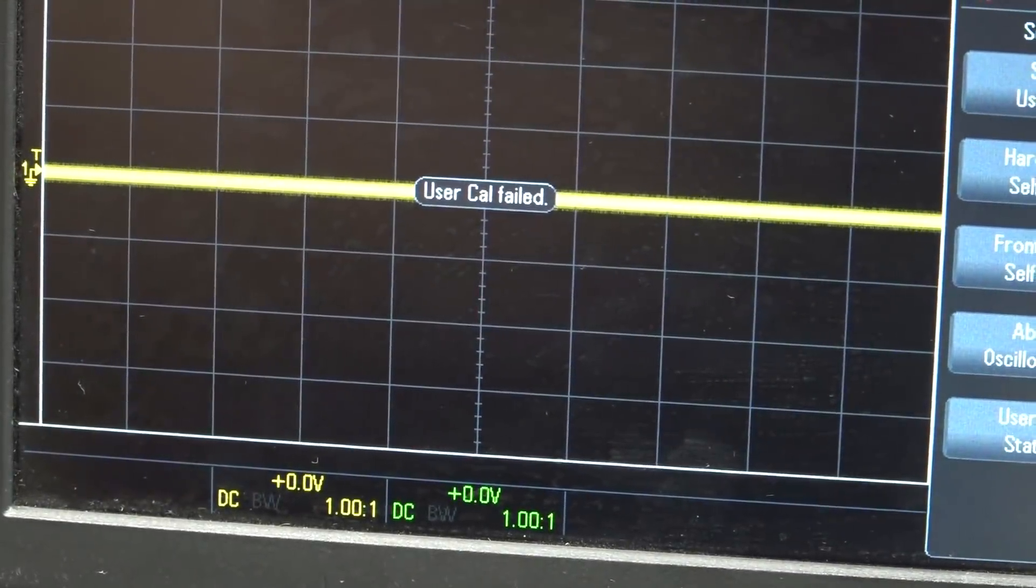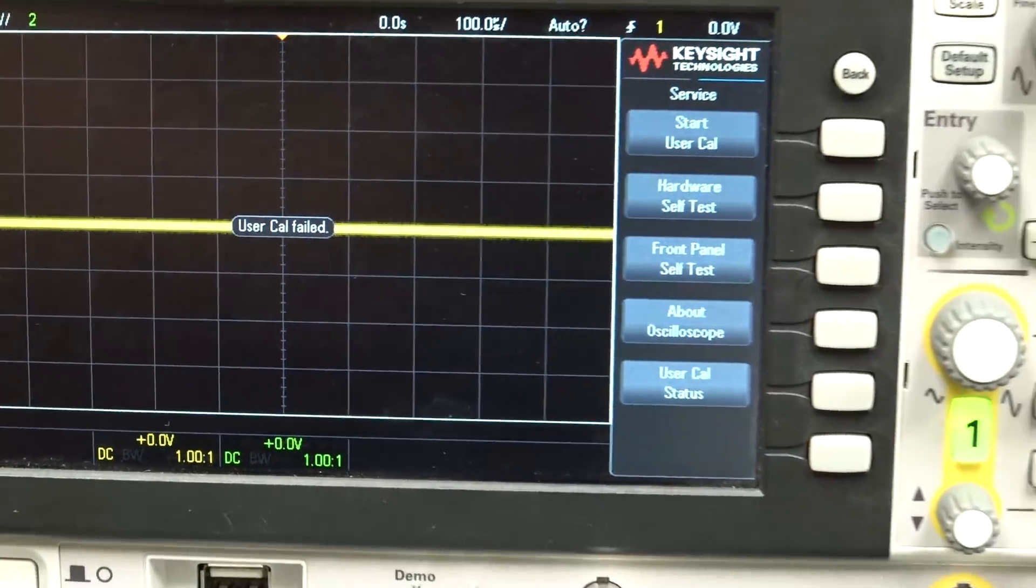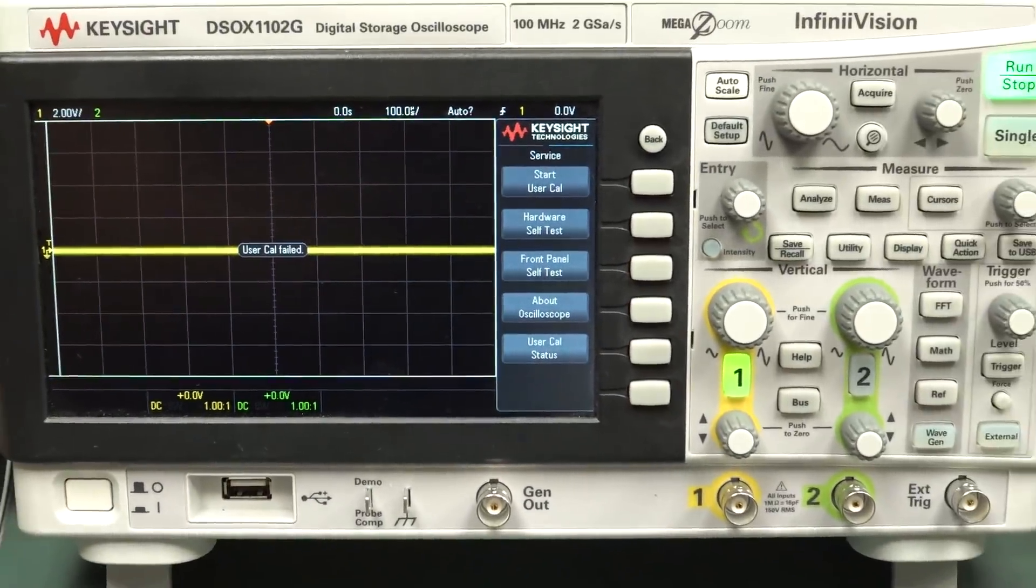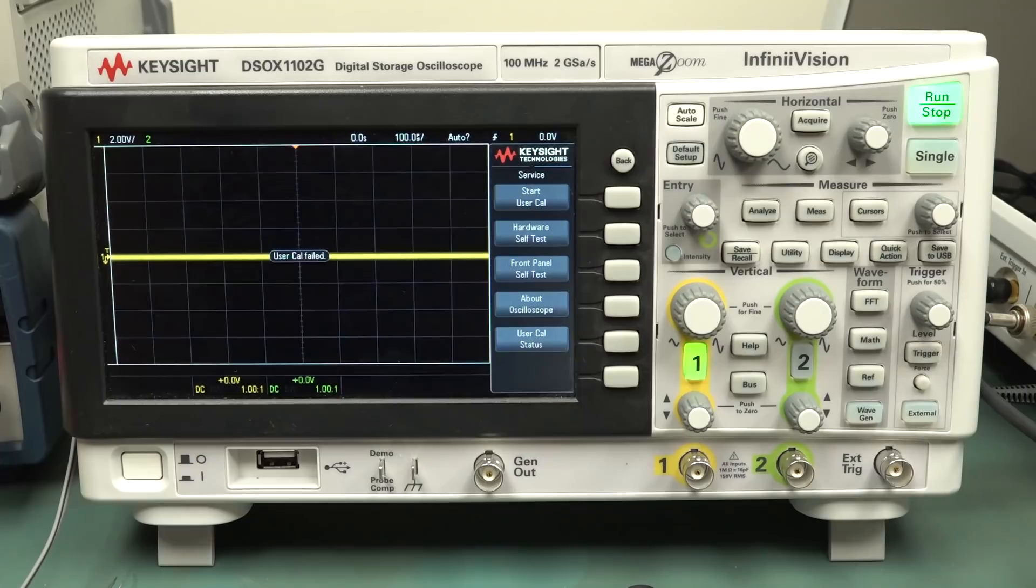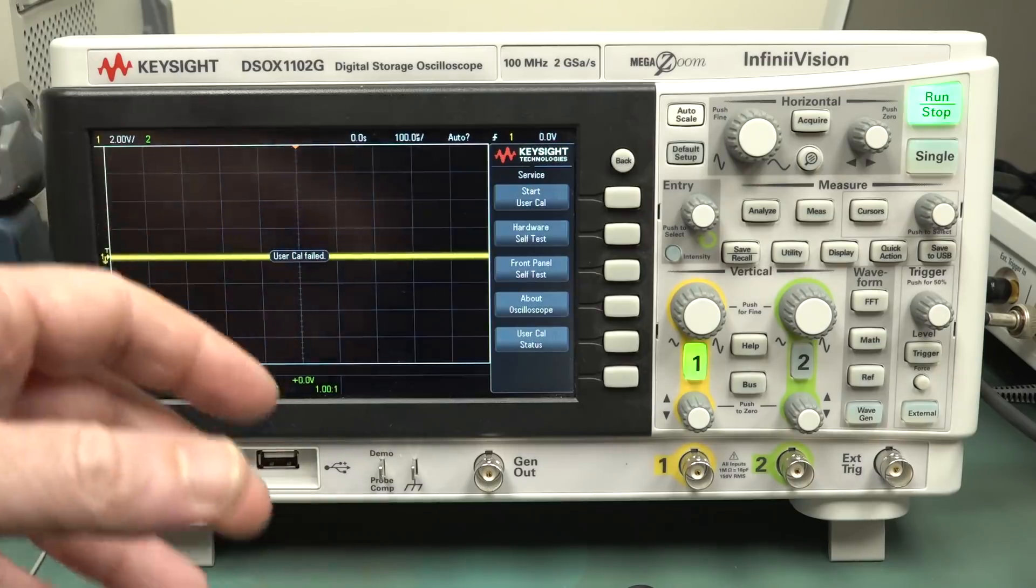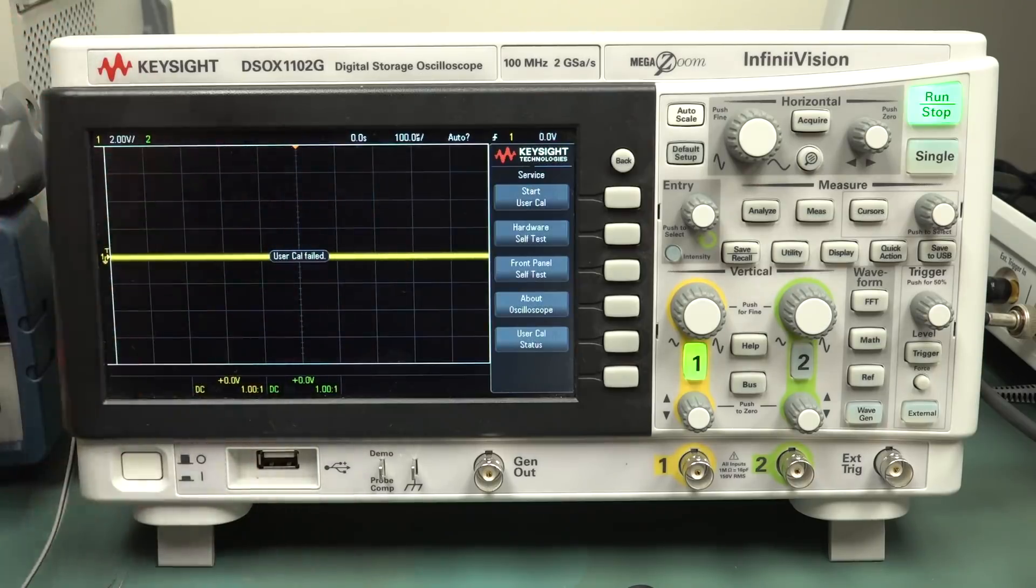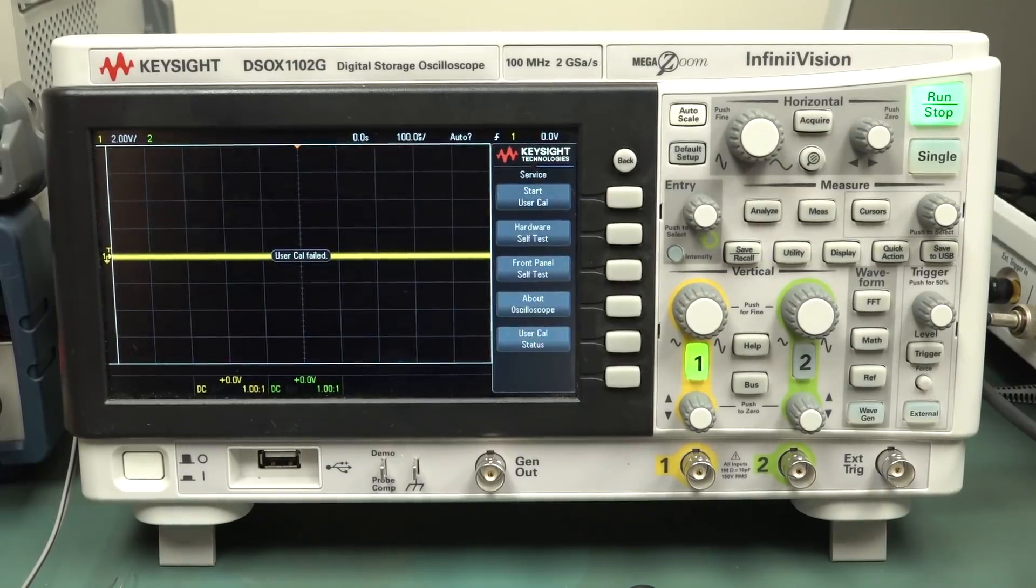User calibration failed. Because I had an issue with the DC offset on this thing, and the firmware was way behind, I thought I'll do the user calibration, which takes about seven minutes. It's very comprehensive. It generates its own internal test signals and it calibrates the channel offset, the channel gain, and all sorts of weird and wonderful stuff.